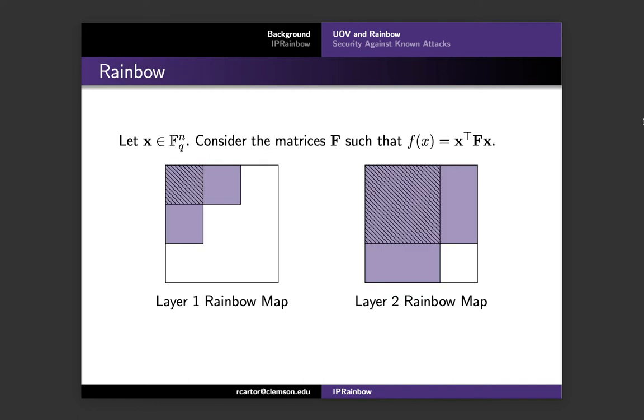This picture illustrates the matrix representation of the rainbow polynomials. If we consider a vector x of length n, the first V sub i elements represent the vinegar variables, and the remaining elements make up the oil variables. Thus, when we consider the matrix representation of the UOV polynomials, we see that we have non-zero coefficients in the coordinates that would correspond to either a vinegar times a vinegar variable or an oil times a vinegar variable. The coordinates corresponding to the oil times oil terms will be zero, which are represented with the white in the matrices. Notice that there are less vinegar variables in level one than in level two, which corresponds to having more oil elements in level one.